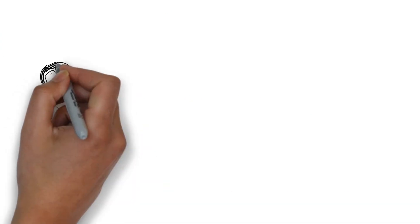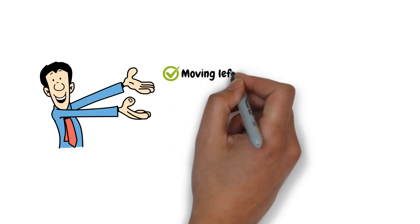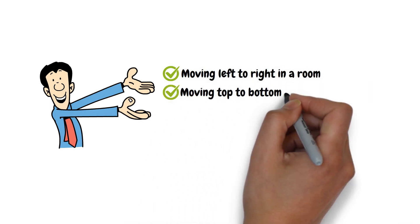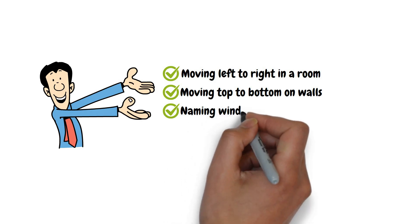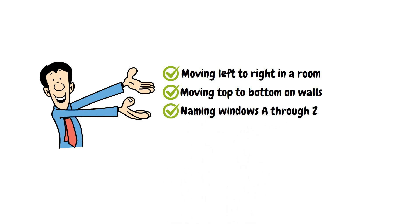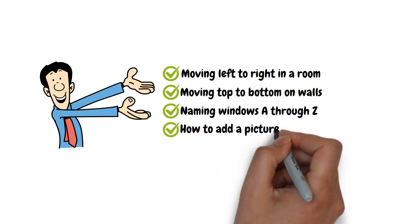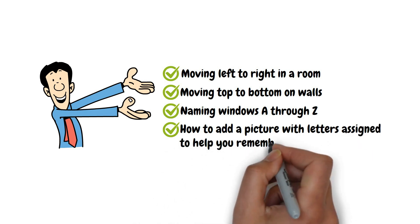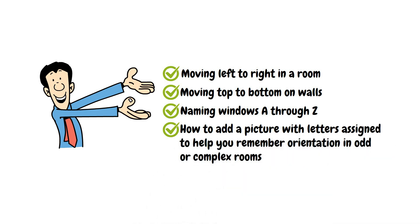Our agenda today is to cover moving left to right in a room, moving top to bottom on walls, naming windows A through Z, and finally we will review a best practice: how to add a picture with letters assigned to help you remember orientation in odd or complex rooms.